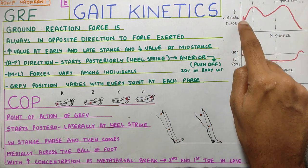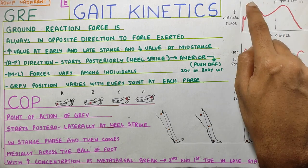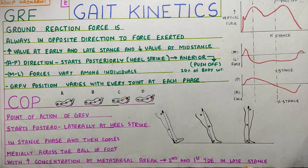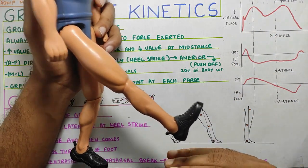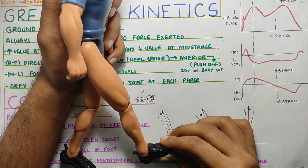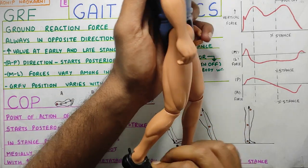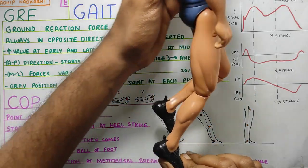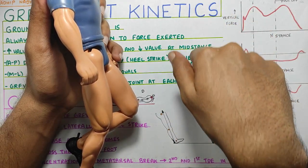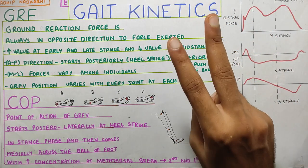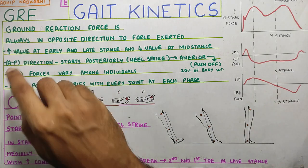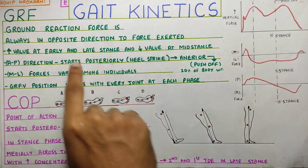It is high at weight acceptance, then during the middle part it goes low, and then again at push-off it increases. Why is it high at both these two ends? That is because first during the heel strike, when the leg hits the ground, that's when the most amount of force is exerted. Then you are transferring your weight in the stance phase, and then again you are pushing off the ground — that's when you again exert force on the ground. So those are the two points where you exert more force: weight acceptance and during push-off, the value of ground reaction force is slightly higher.